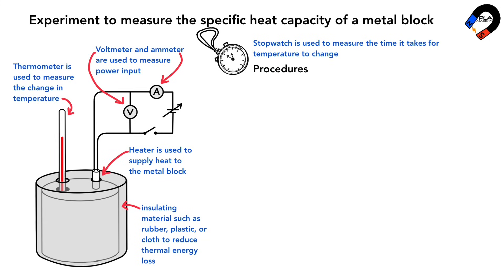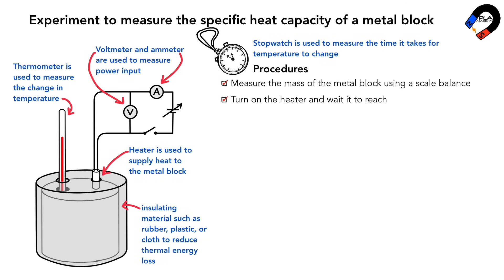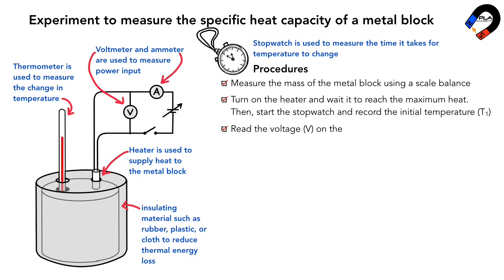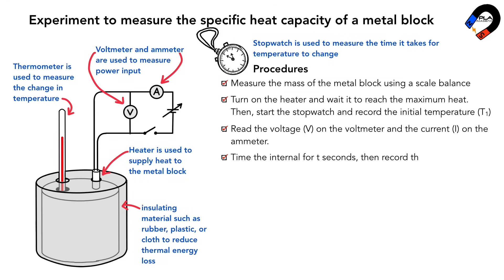The procedure is as follows. First, measure the mass of the metal block using a scale balance. Second, turn on the heater and wait for it to reach maximum heat, then start the stopwatch and record the initial temperature T1. Third, read the voltage V on the voltmeter and the current I on the ammeter. Fourth, time the interval for t seconds, then record the final temperature T2.